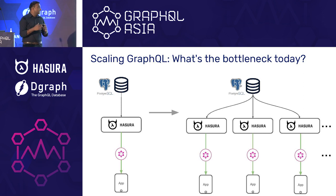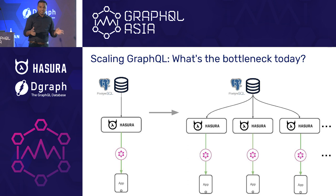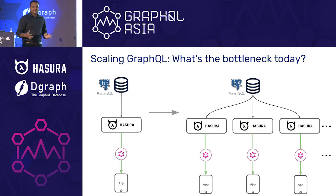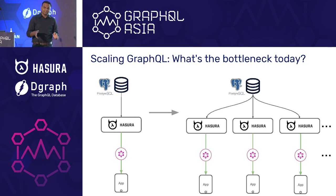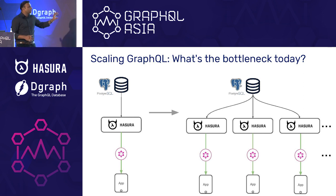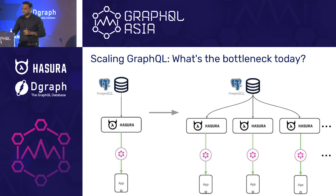There are a few ways to fix this bottleneck. You can use some homegrown replication techniques, or you can scale up the Postgres instance, but one day you're going to hit the absolute resource limit of that VM or bare metal server. So a bunch of our time today is going to be focused on that aspect — the data tier itself.